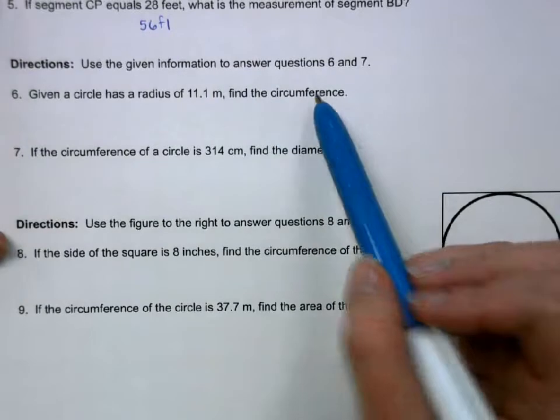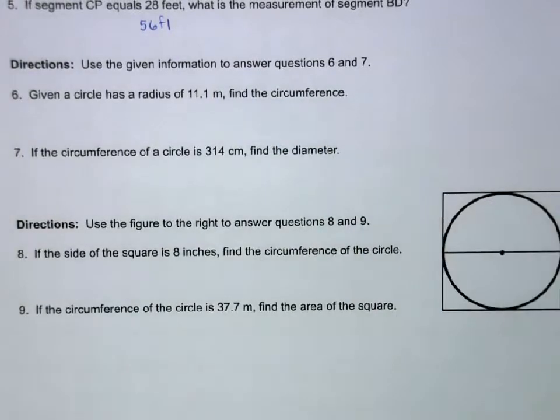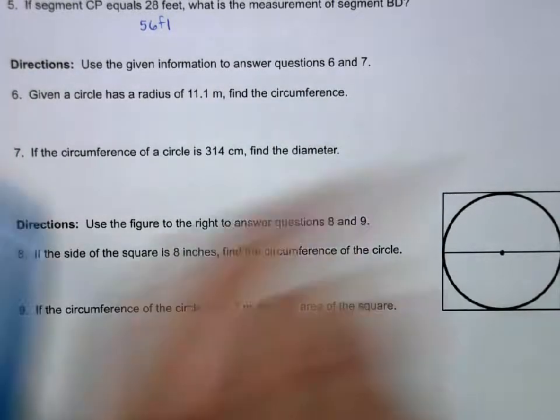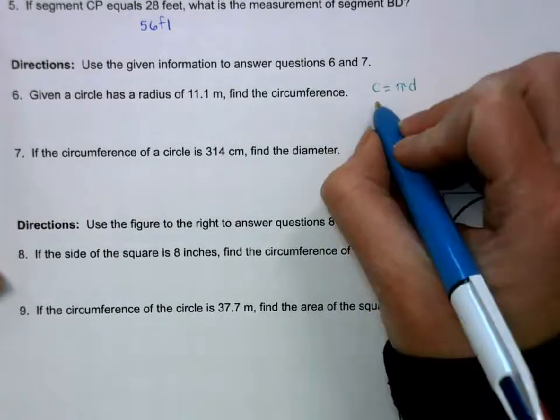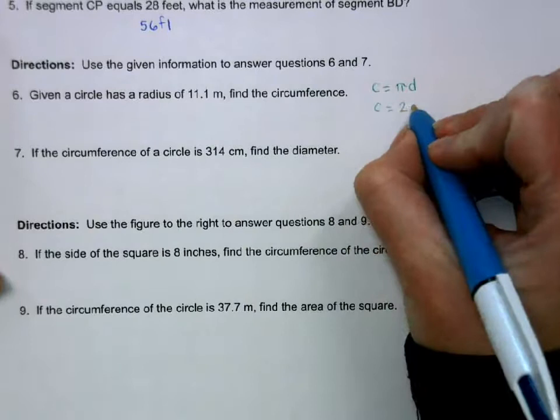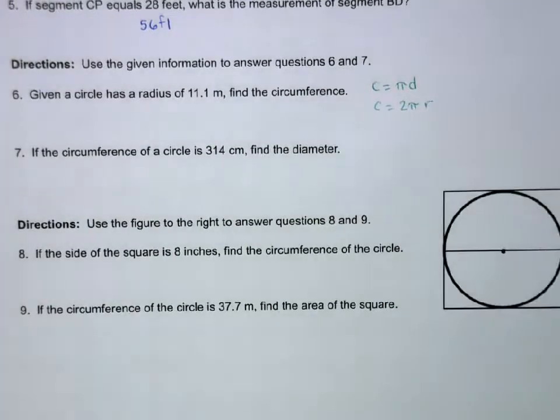Well, next we're dealing with circumference. So there's two formulas for circumference. Either circumference is pi times the diameter, or the circumference is 2 pi times the radius.